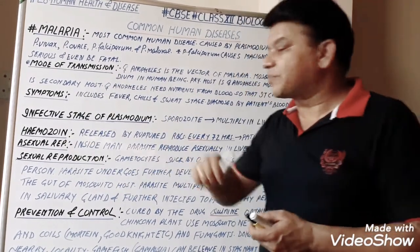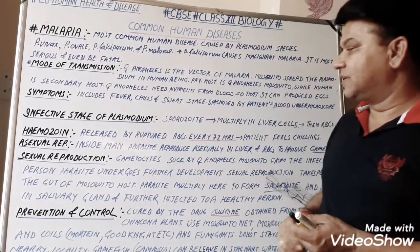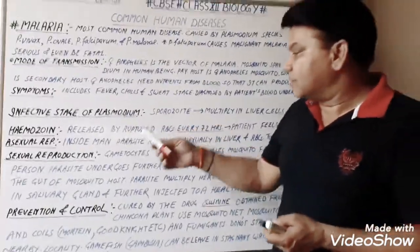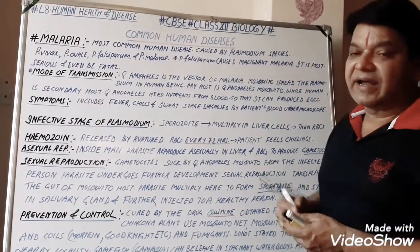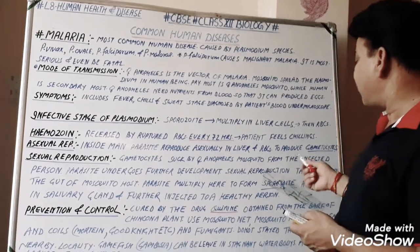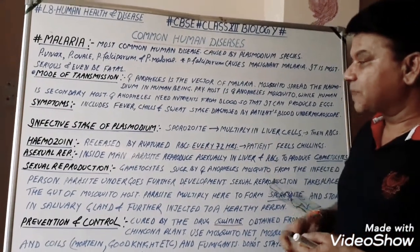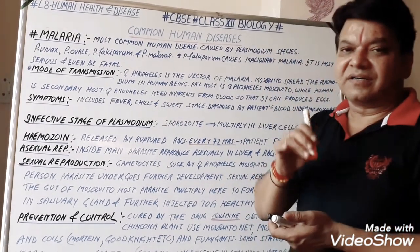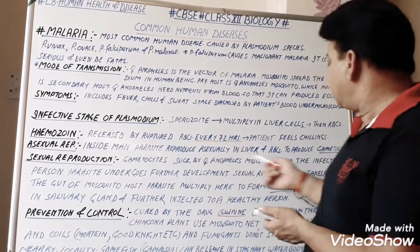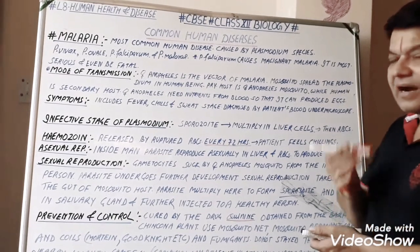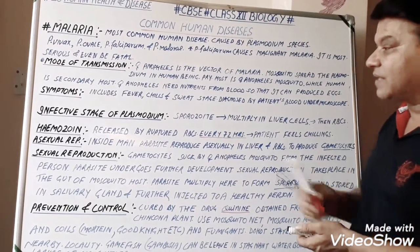Asexual reproduction of the parasite Plasmodium takes place inside human beings. The parasite reproduces asexually inside the liver and RBC of human beings and forms gametocytes. These gametocytes are the asexual units and are sucked up by the mosquito when it bites an infected person. These gametocytes then behave as male and female gametes.